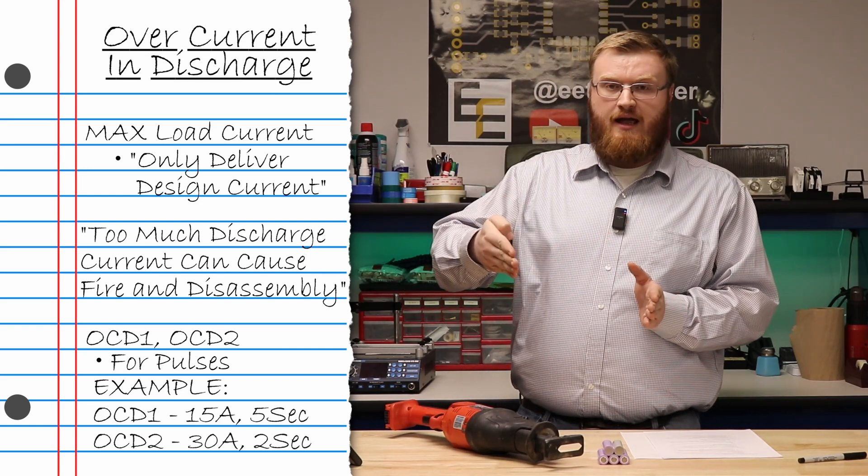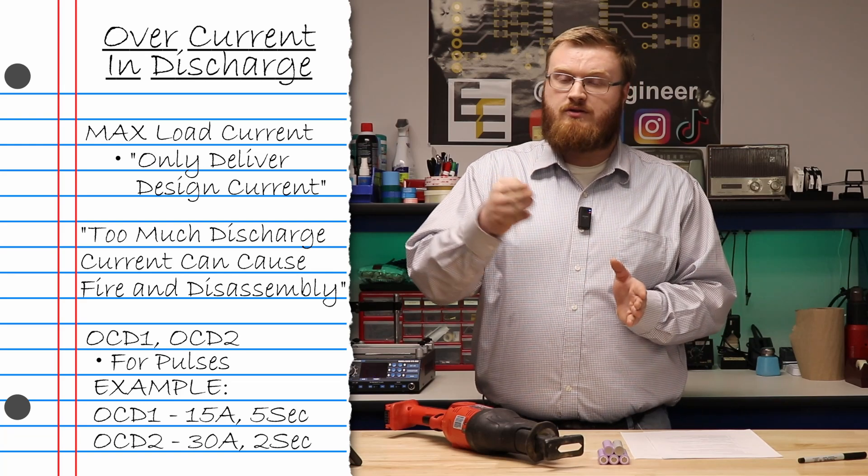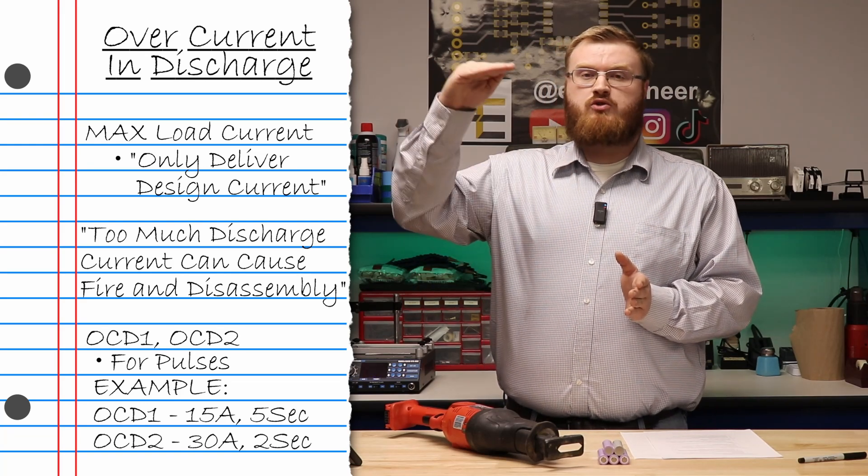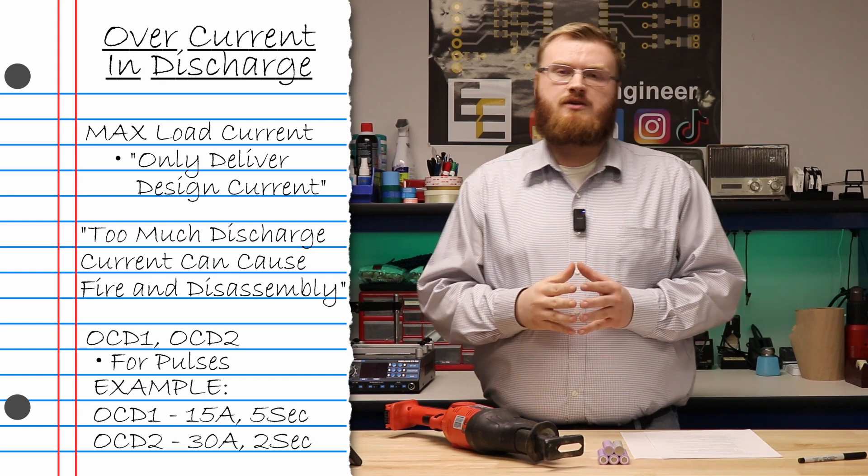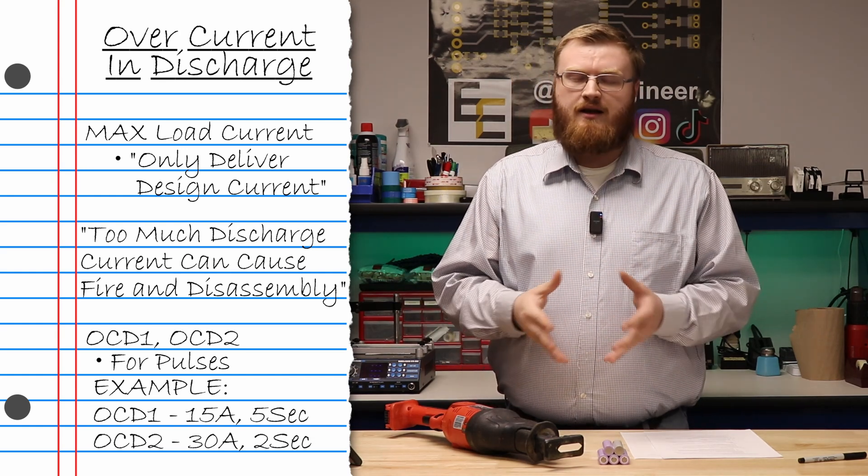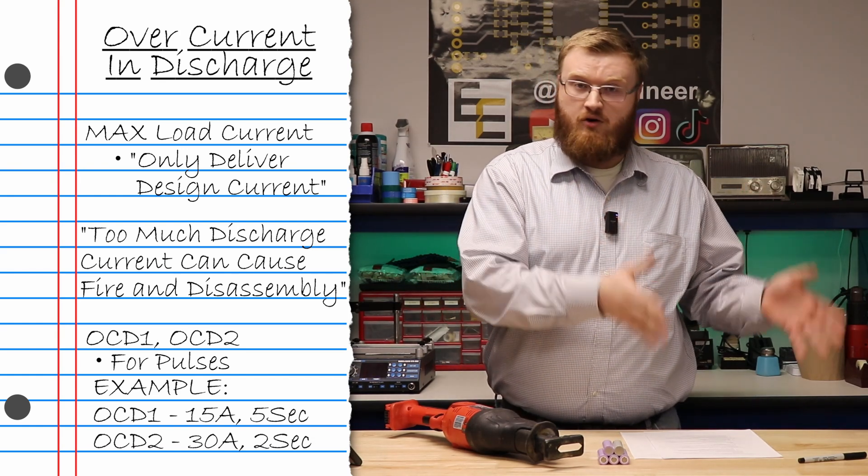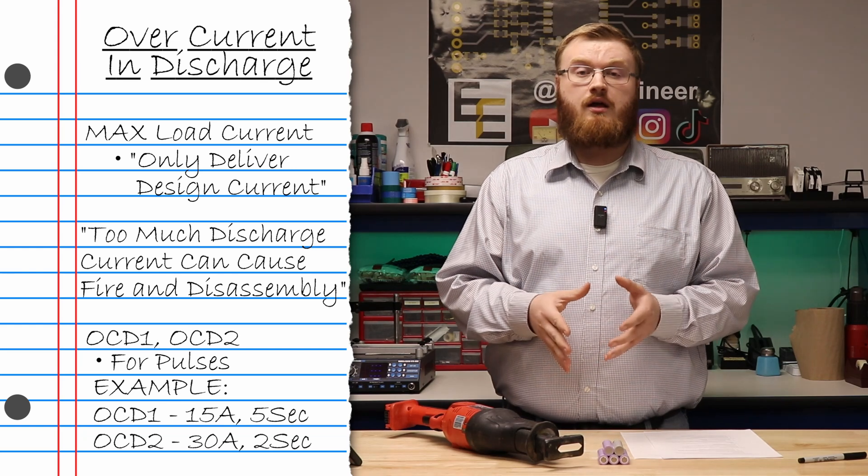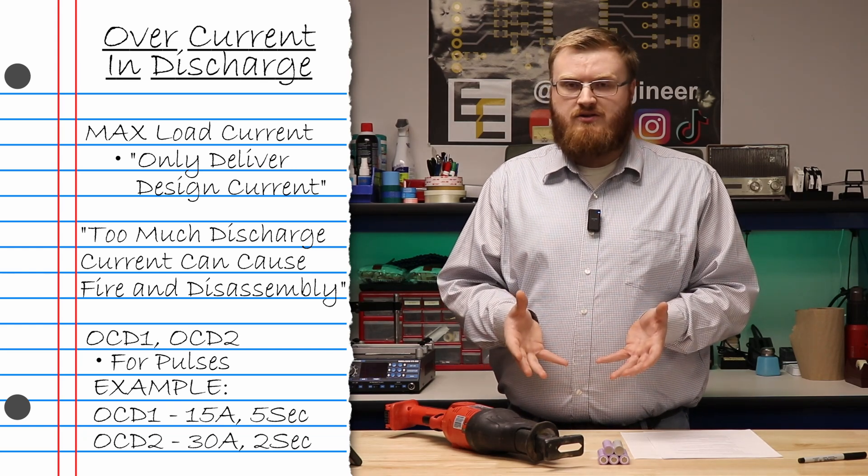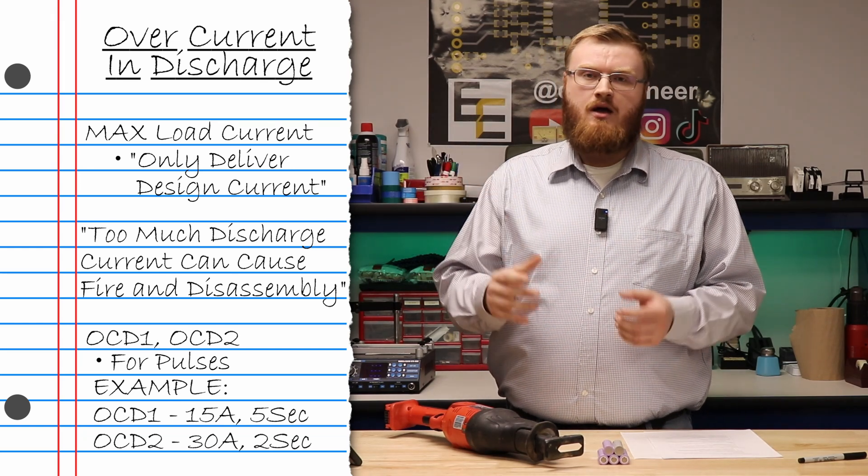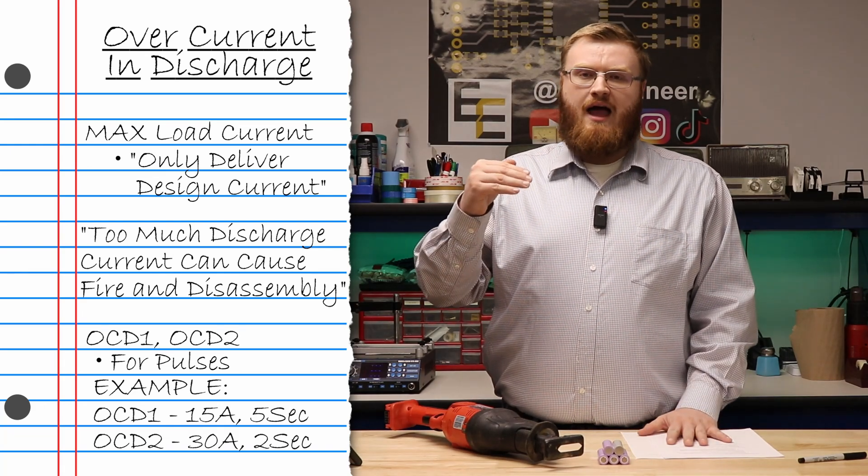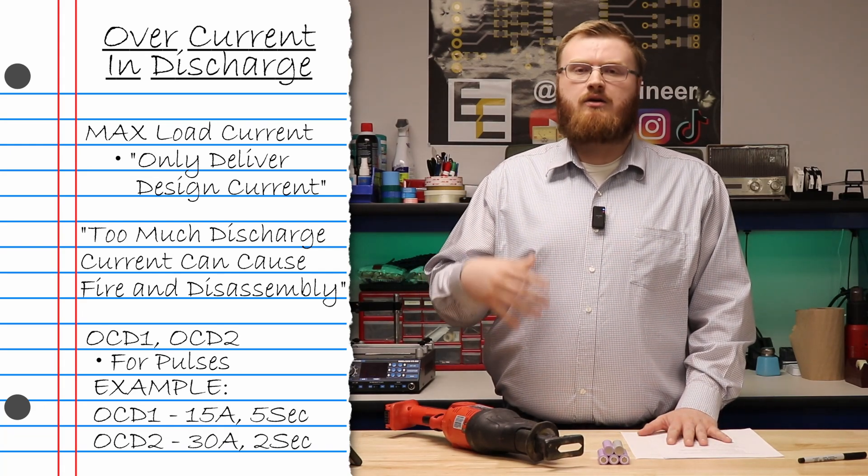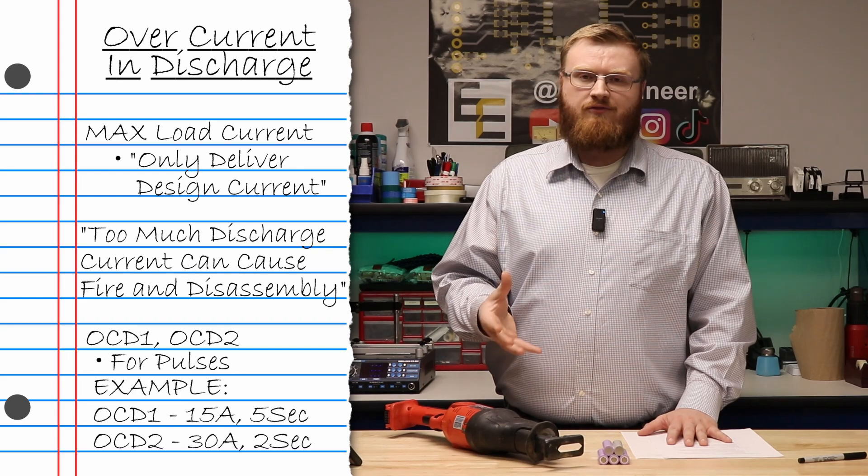So your OCD2 trip point would be 30 amps at two seconds. You could draw up to 30 amps for two seconds. If you draw more than 30 amps for two seconds, it will trip first before your OCD1 trip. That's a good feature that a lot of these chipsets have. Both your smart chipsets and analog front ends often have these features. You have multi-levels of overcurrent discharge flags for greater pulse capability and greater granularity for controlling the load of your system.